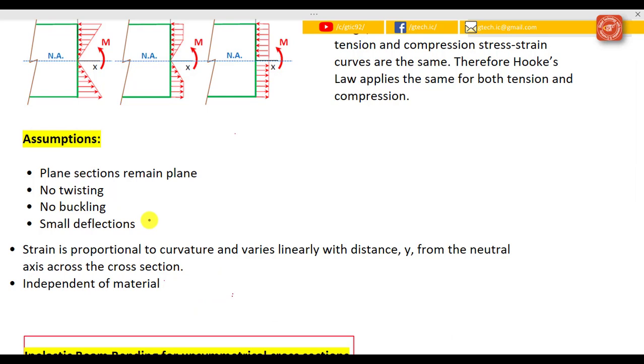The other assumptions that we made that still hold true are that plane sections remain plane, we have no twisting, no buckling, and we have small deflections. We'll find regardless of the material, the strain is proportional to the curvature and varies linearly with distance y from the neutral axis across the cross section. This is very useful in solving actual problems as we go along.